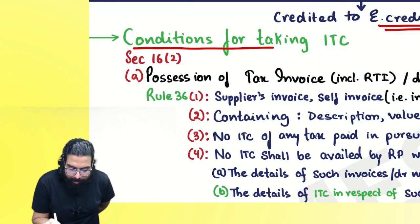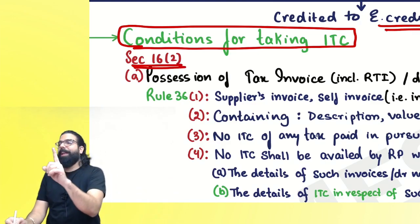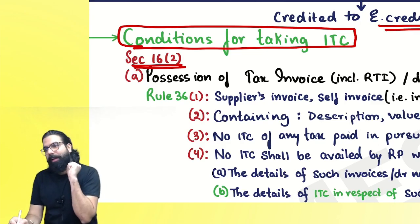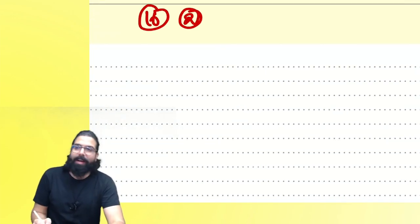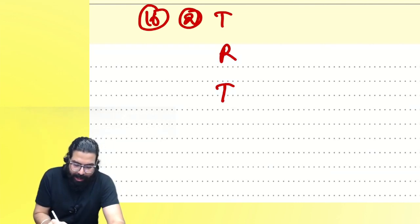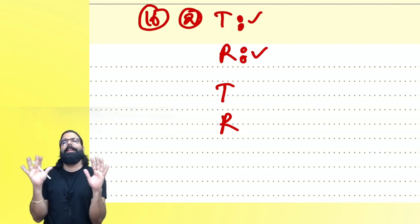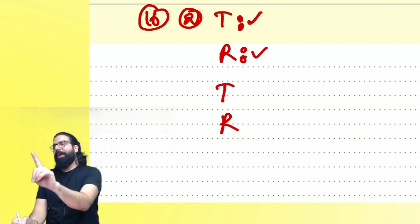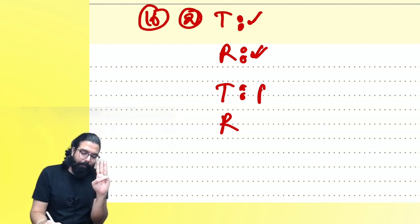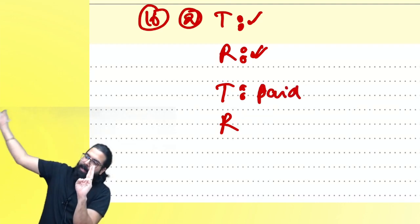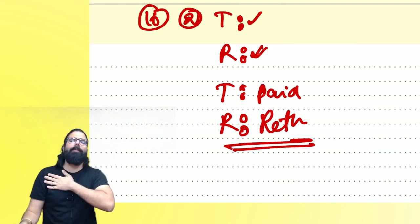Section 16(2) gives the conditions for taking input tax credit. Earlier there were only four conditions. Condition 1: you have the tax paying document (tax invoice, revised tax invoice, etc.). Condition 2: you have received the goods. Condition 3: tax has been paid to the government (supplier has paid). Condition 4: you have filed your return. Government has now added clauses AA and BA.